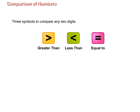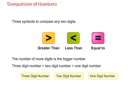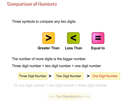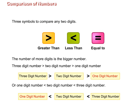Let us learn how to compare two numbers. The number with more digits is the bigger number. That is, a three-digit number is greater than a two-digit number. A two-digit number is greater than a one-digit number. Or, a one-digit number is less than a two-digit number.